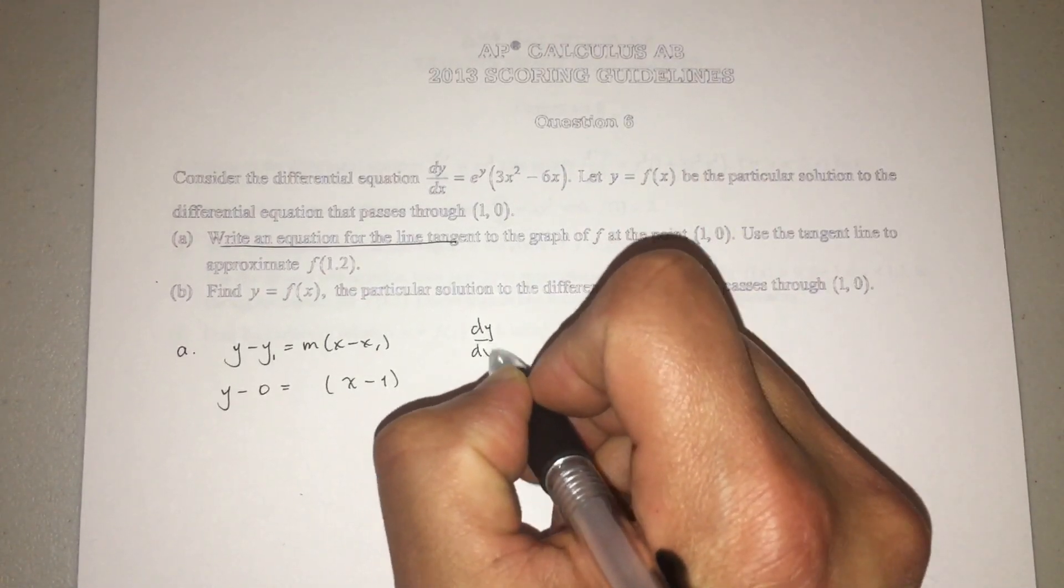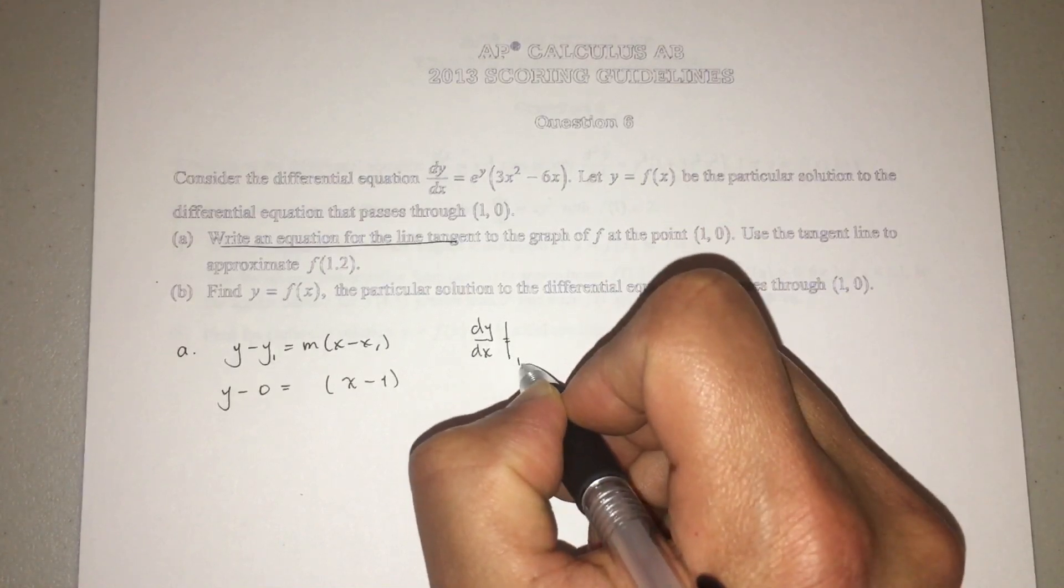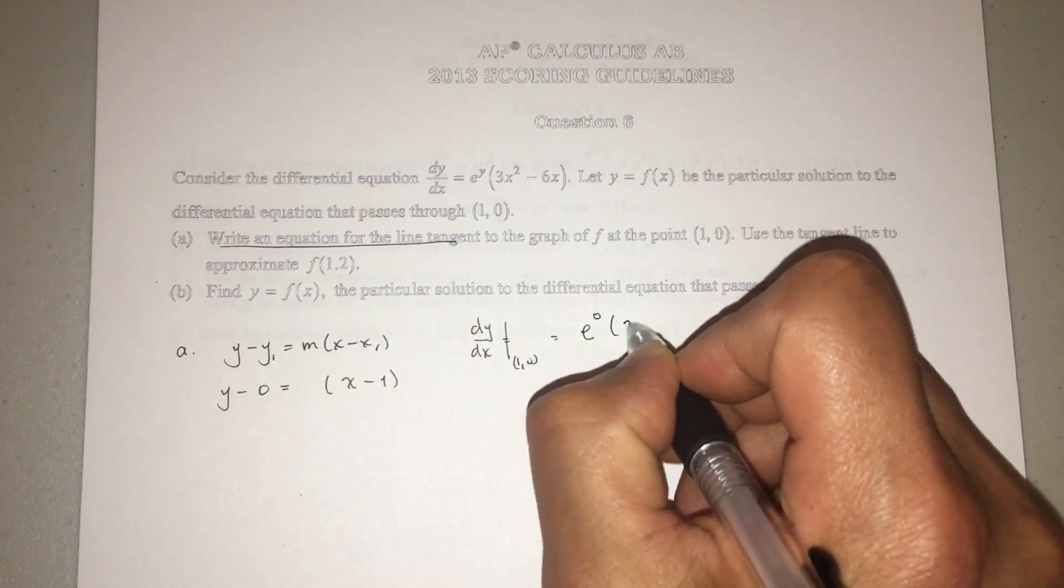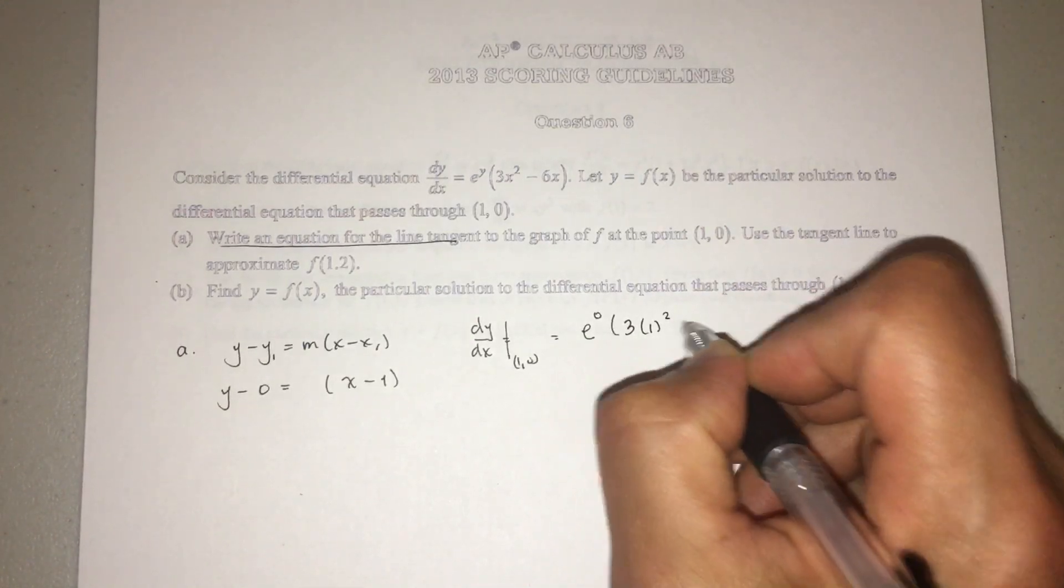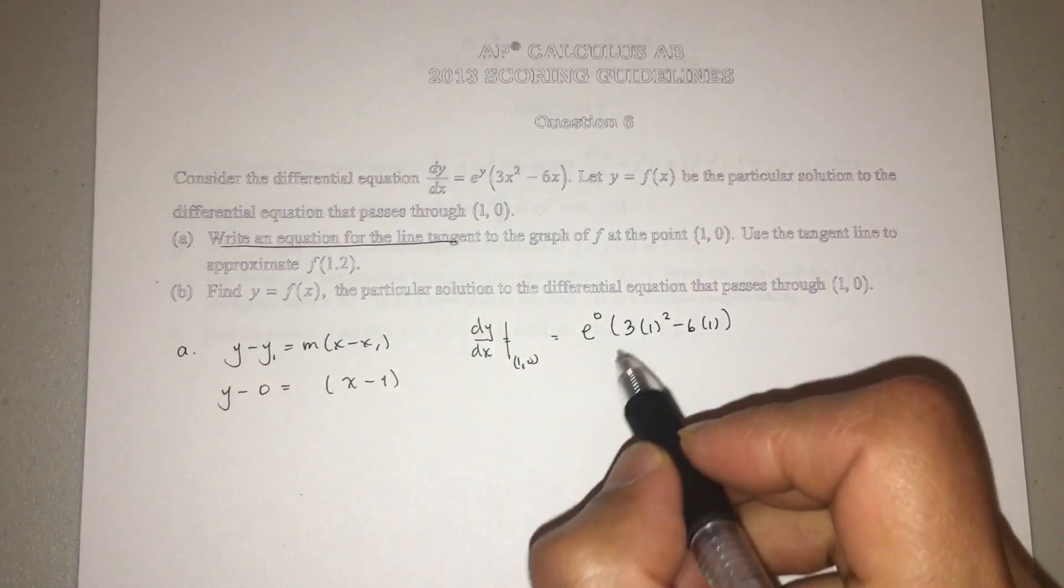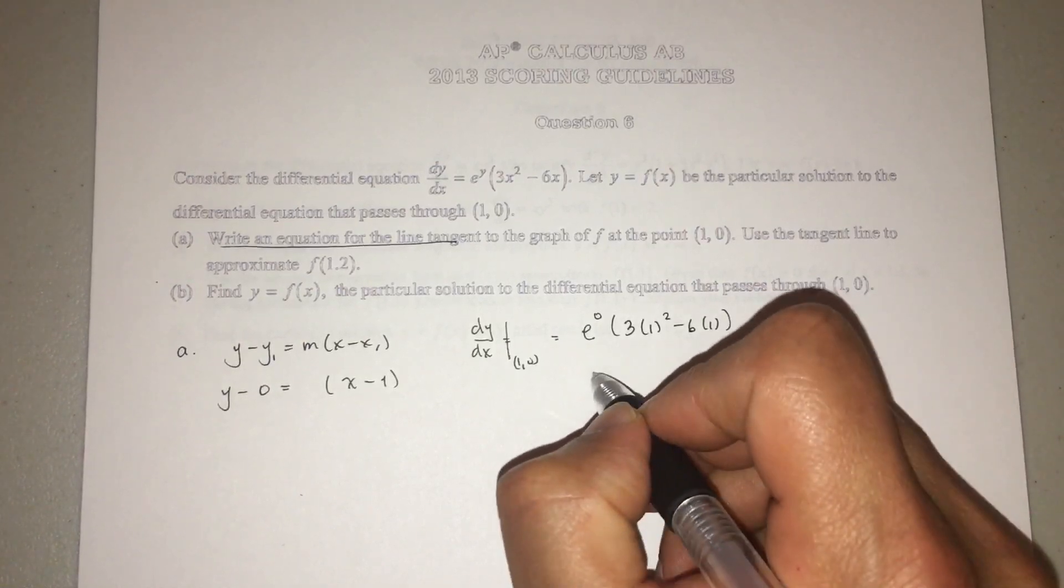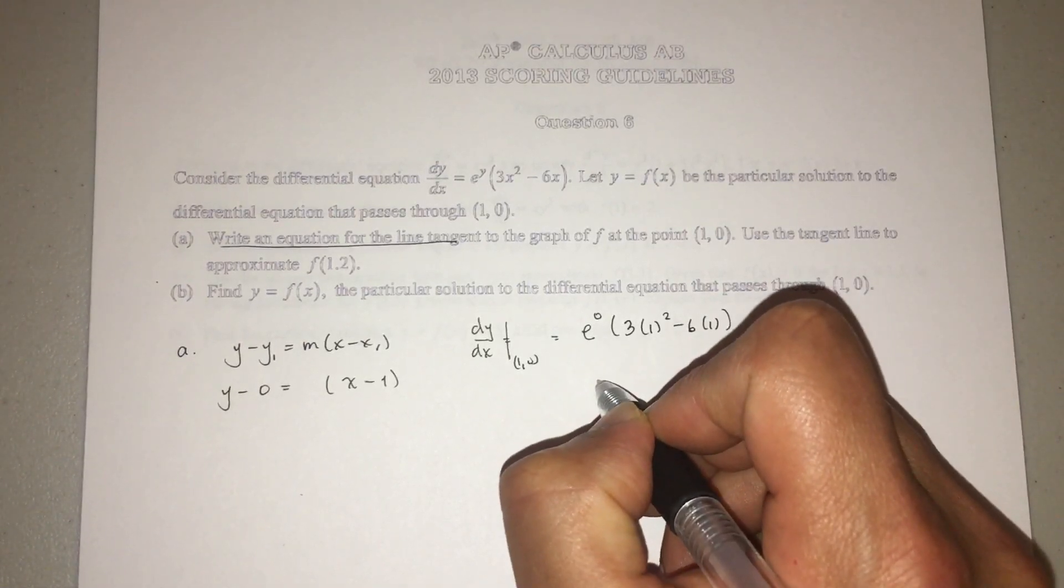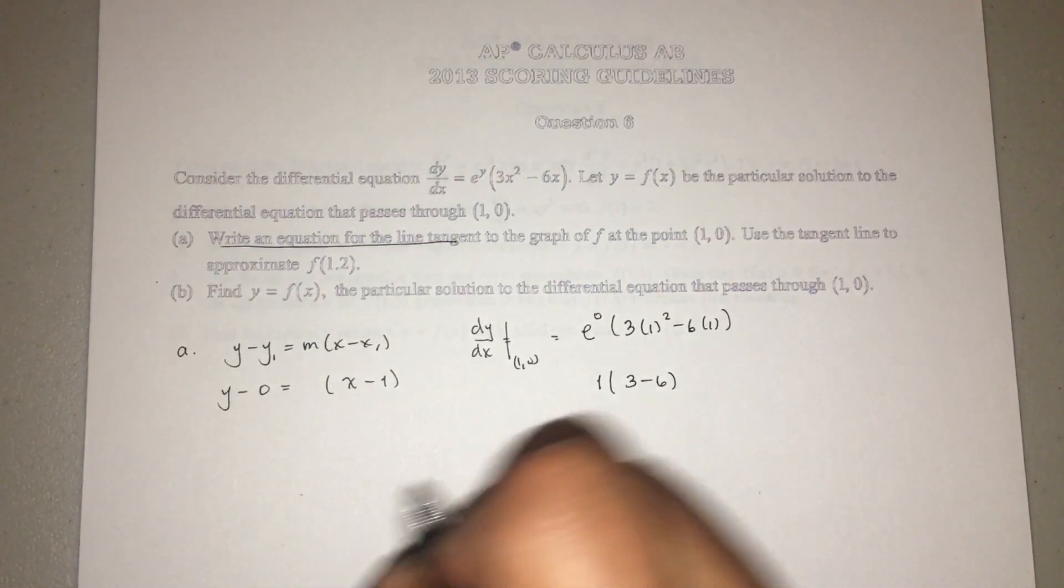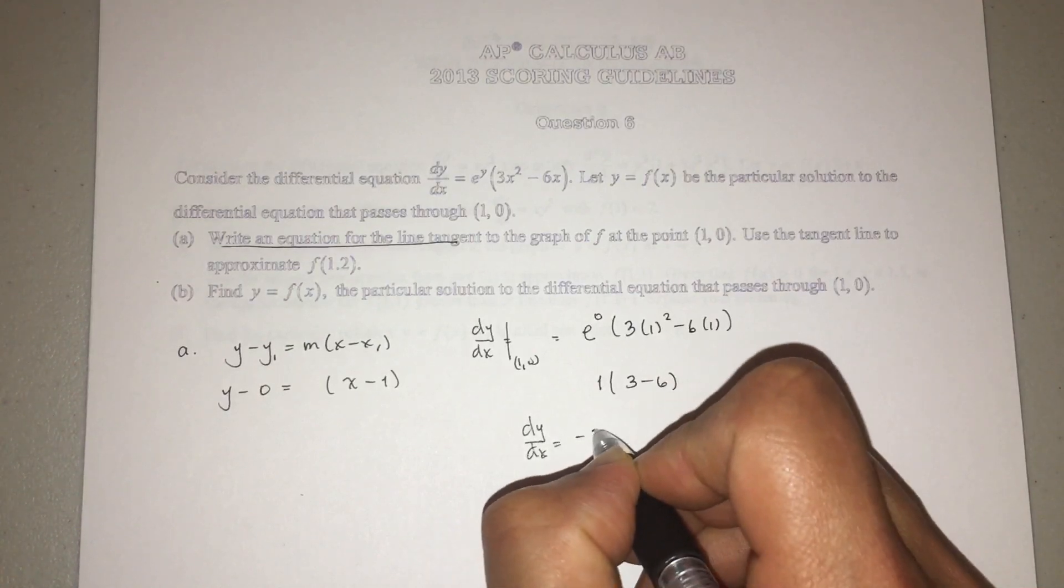So now how do we find our slope? We're going to use this guy right here. Our initial condition is (1,0), so just plug that guy in. So let's see here, dy/dx at (1,0), that's going to be e^0 times 3(1)^2 minus 6(1). And then just go ahead and do the math. So this would give me 3(1) - 6. e^0 is 1, so this would give me 3 - 6. 3 - 6 is -3, so dy/dx = -3.